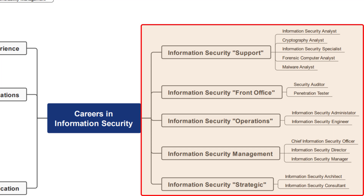Next I call it the information security front office. The security auditor and penetration tester are two specialized roles that might not necessarily have a home in other areas — specifically they do not fit the analyst support roles at all. Then we have information security operations, which covers information security system administration and the information security engineer. You would be engineering solutions or administering and engineering these types of solutions — that's really where applications and the entire infrastructure are managed from an infosec perspective.